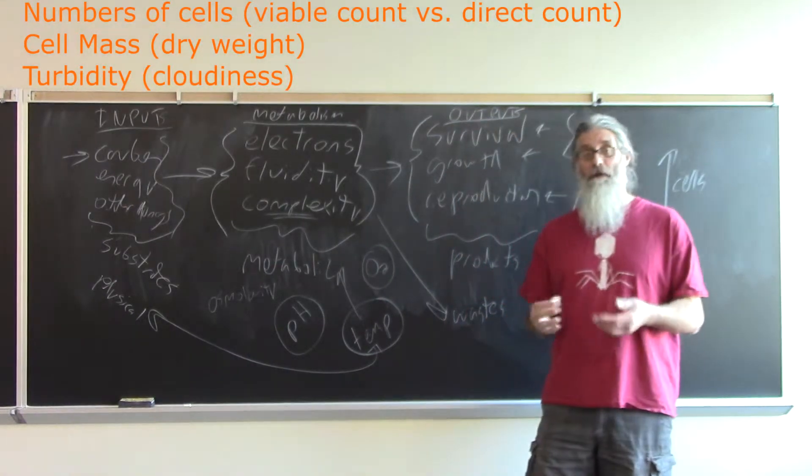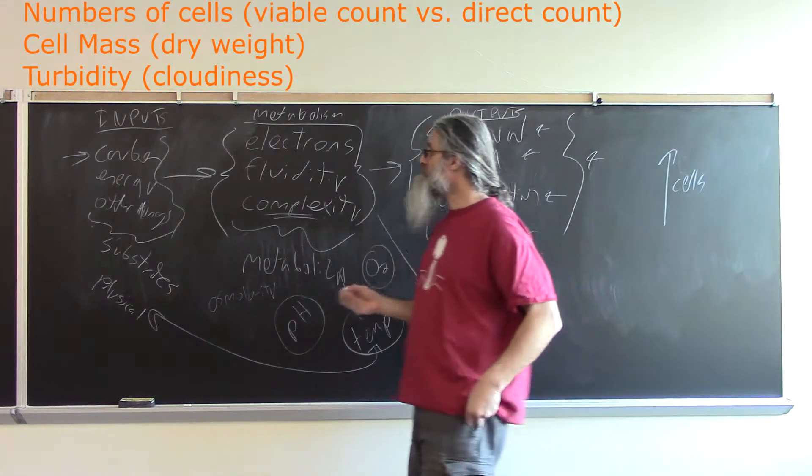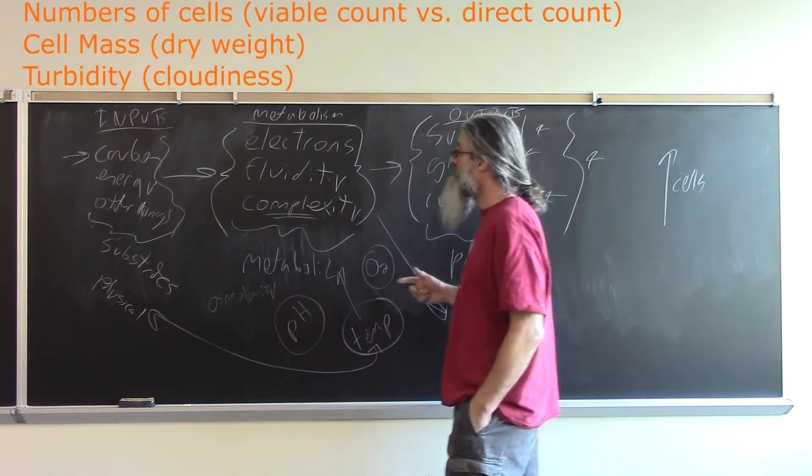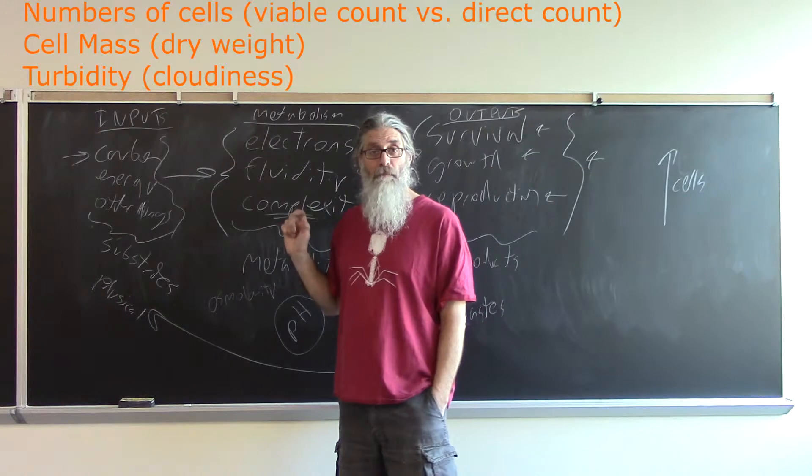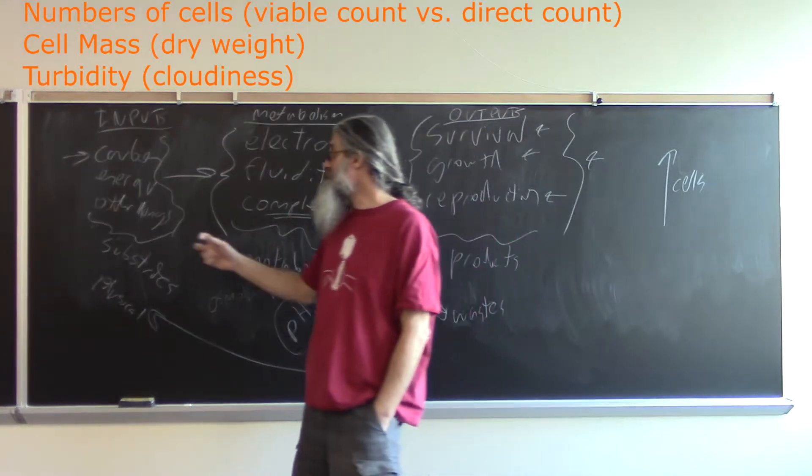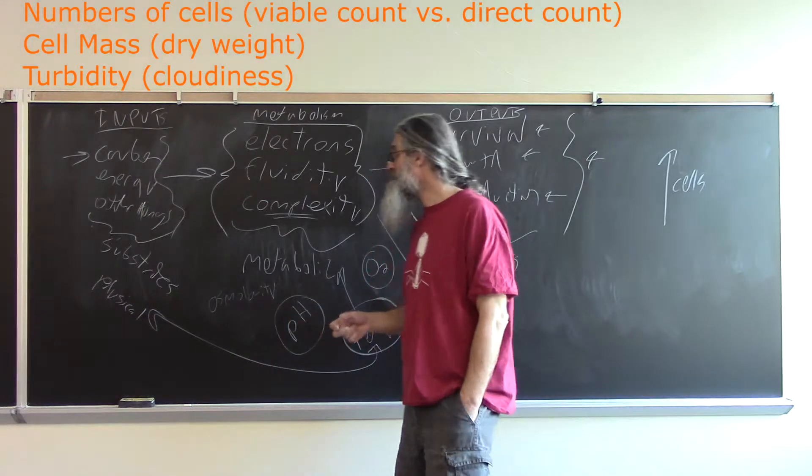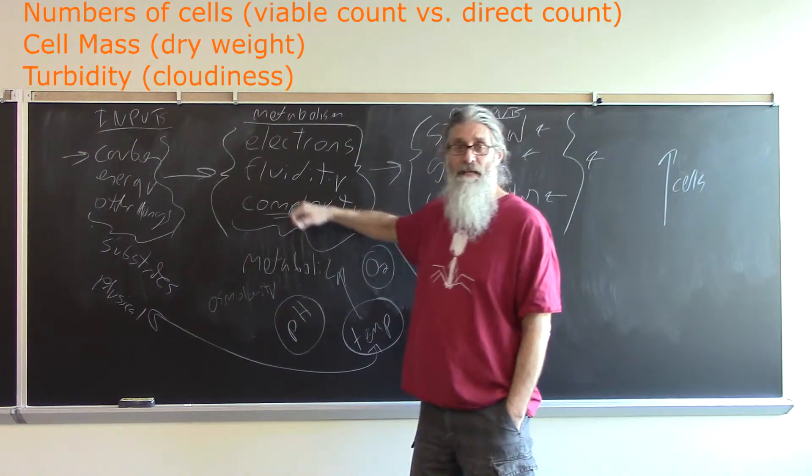To finish up, we've got various kinds of inputs that are acted upon metabolically—whether these things are chemical differences in the environment or physical differences in the environment. The organism has a certain metabolism, so different organisms are going to be able to act upon these things differently metabolically.